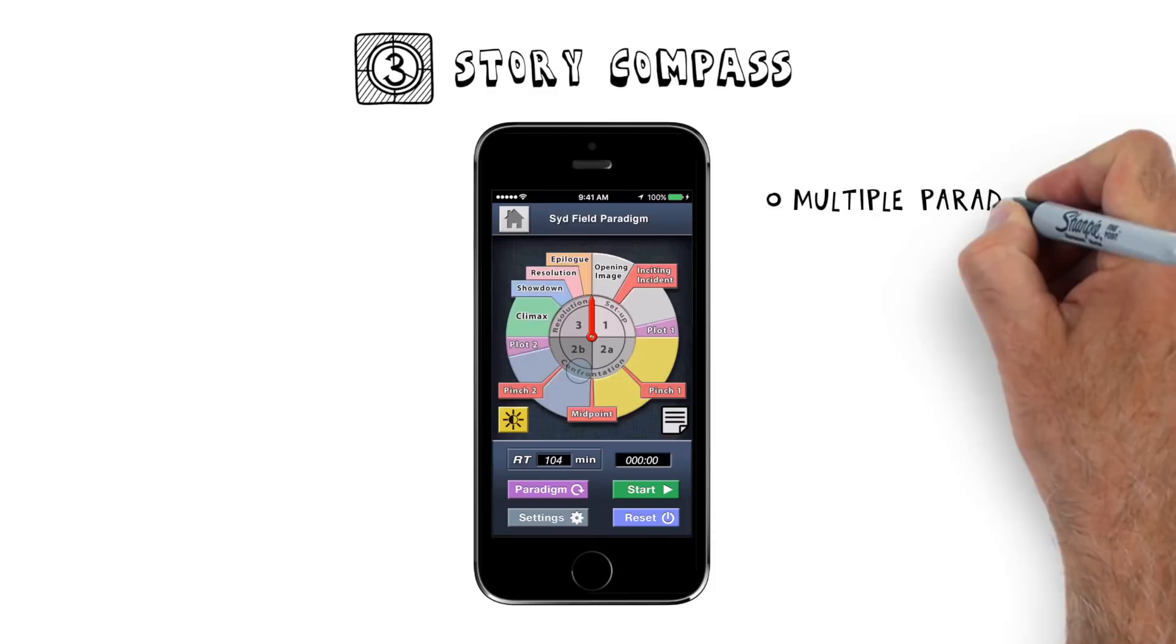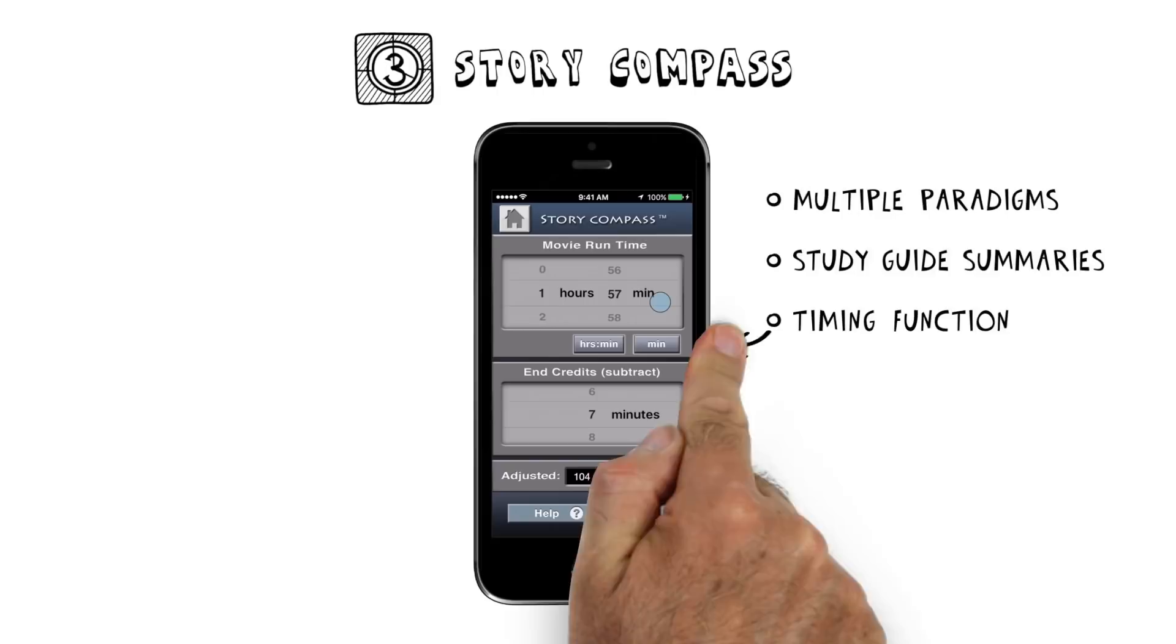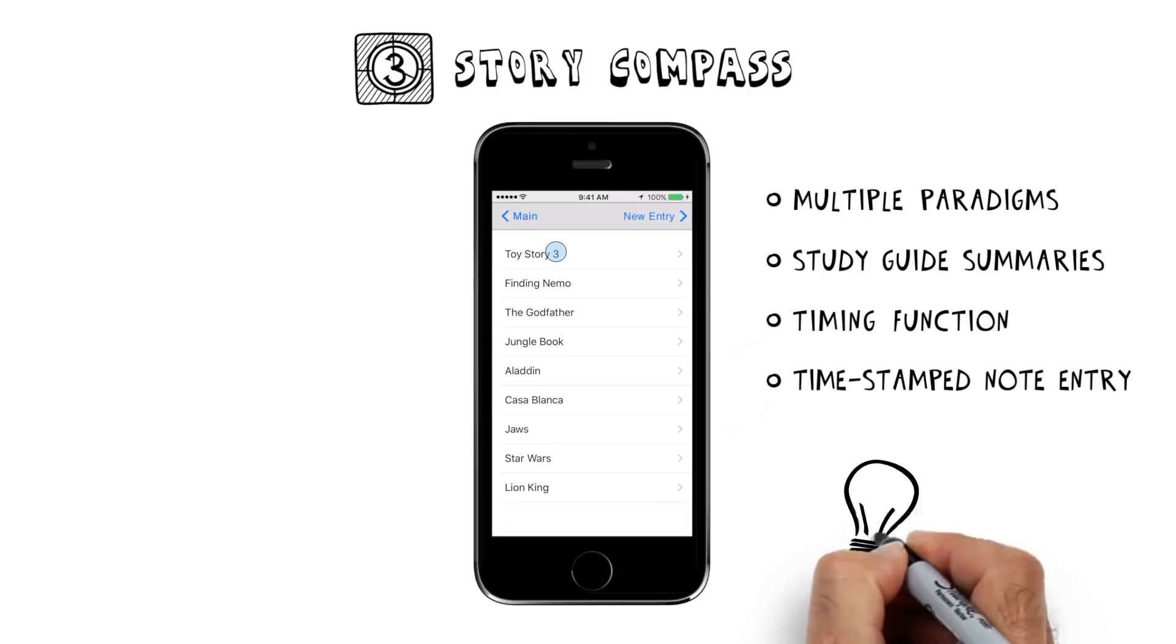This is Story Compass, a writer's utility that guides you through the structure of a screenplay, with a timing function to evaluate films in real time to see how filmmakers execute the turning points of a story. Insights that you can immediately apply to your own storytelling.